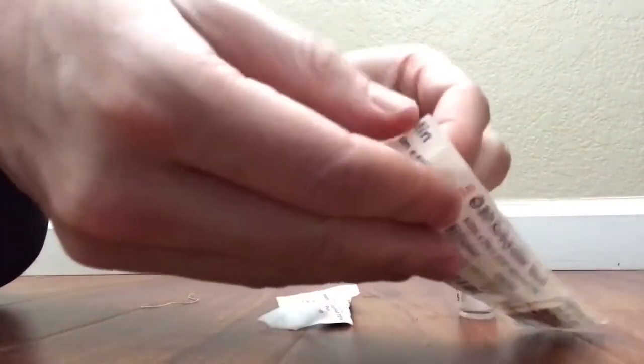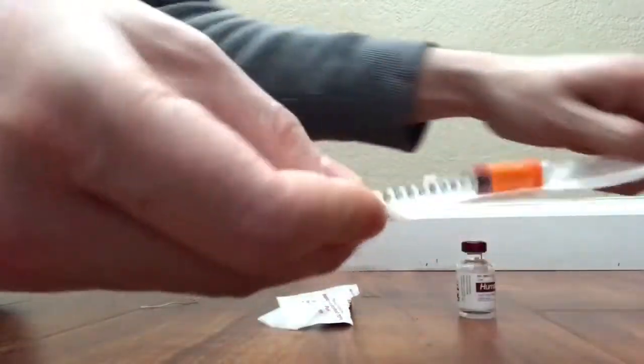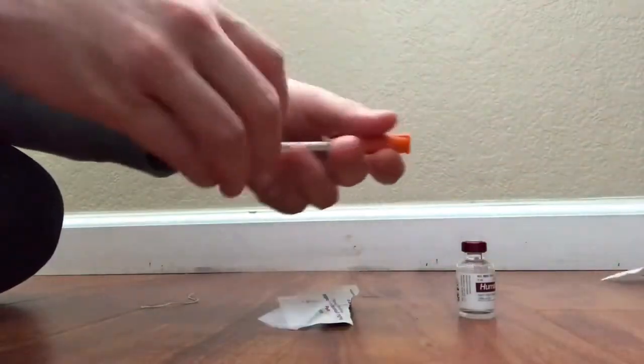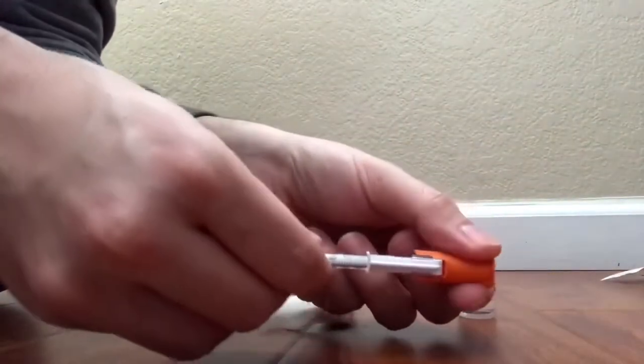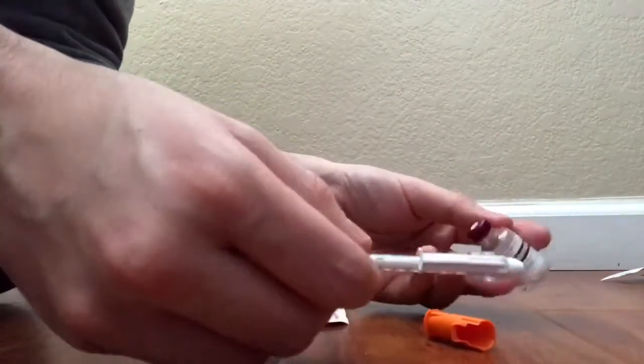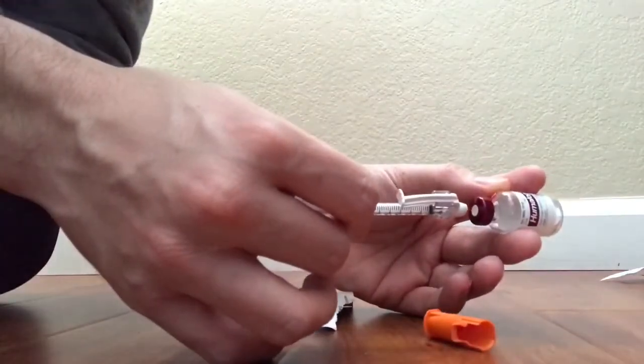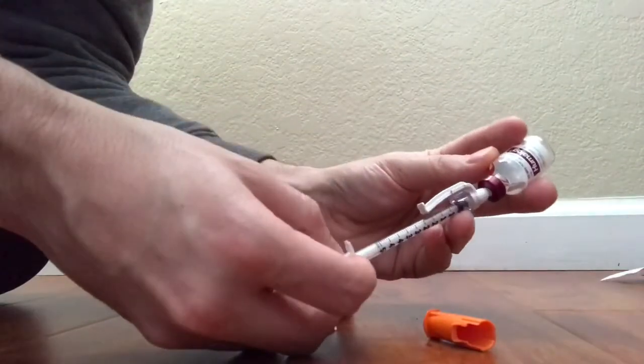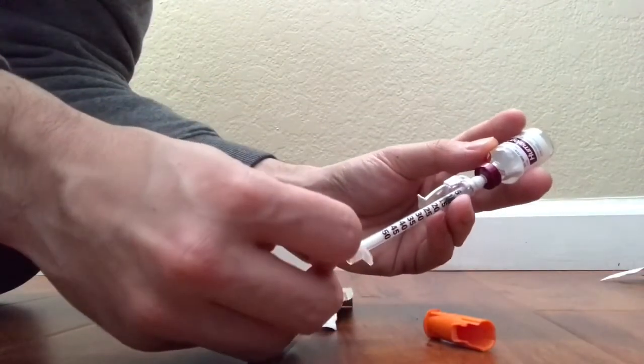Now get your insulin syringe and make sure you know how much you're going to withdraw from it. Uncap it, just place it in, and withdraw. Let's say five units and withdraw five units.